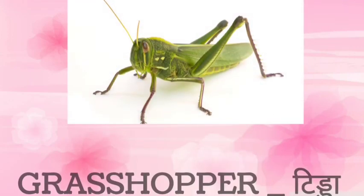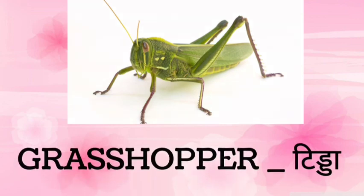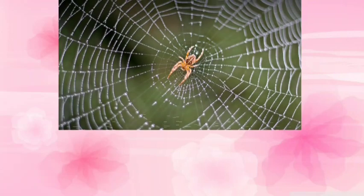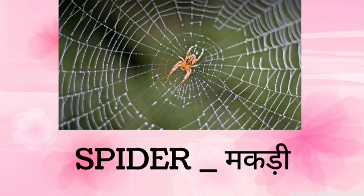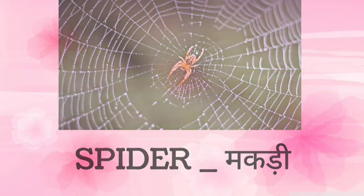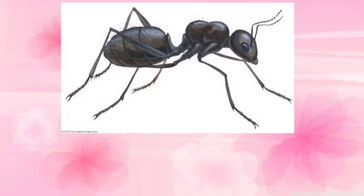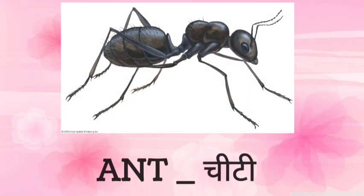Next is grasshopper — grasshopper means tida. Next is spider — spider means makri. Ant — ant means chinti.